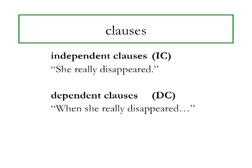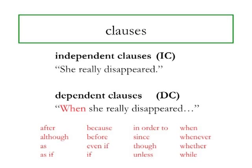Common subordinators include: after, although, as, as if, because, before, even if, even though, if, in order to, since, though, unless, until, when, whenever, whether, and while. If you add any one of these to the beginning of an independent clause, you've just made it dependent on something else.